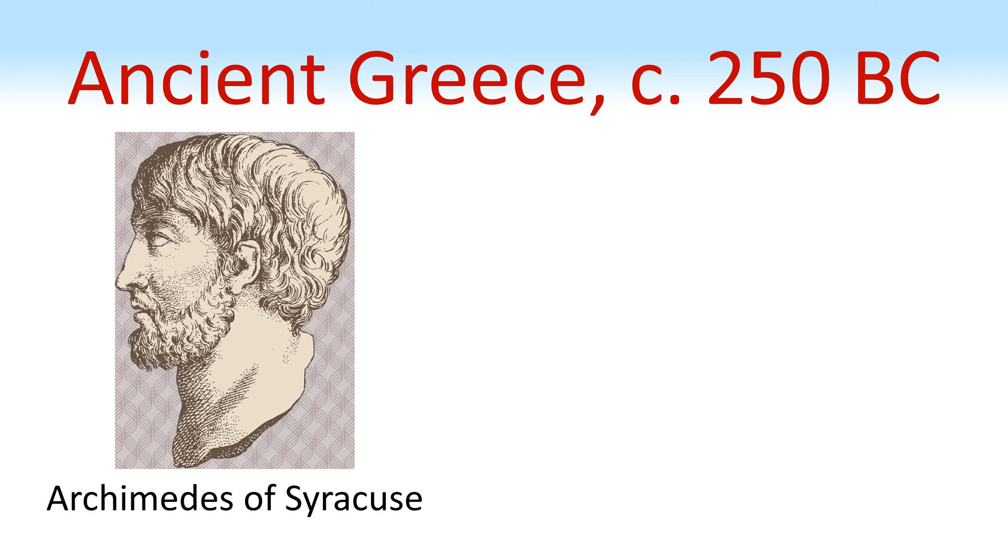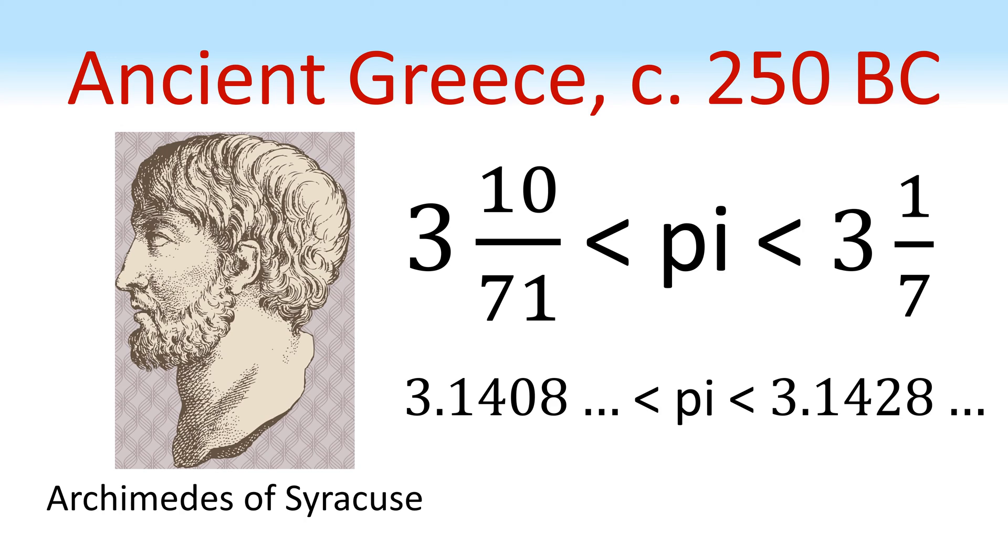Fast forward to ancient Greece in approximately 250 BC where the famous mathematician Archimedes made an important discovery about pi. He showed that pi was somewhere between 3 and 10 over 71 and 3 and a seventh. So that's approximately 3.1408 and 3.1428 in decimal form. Even though we now know pi to trillions of digits, Archimedes' work was a significant step forward.